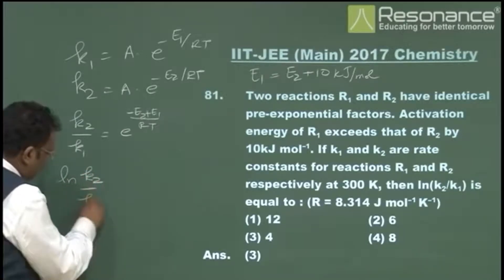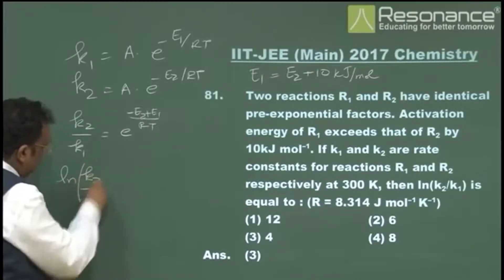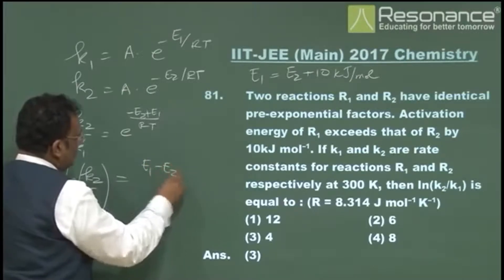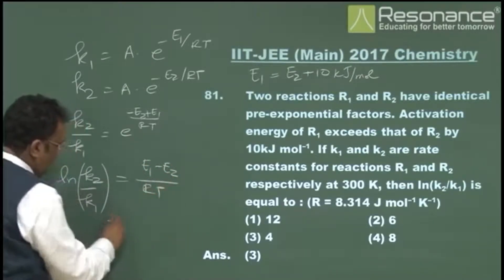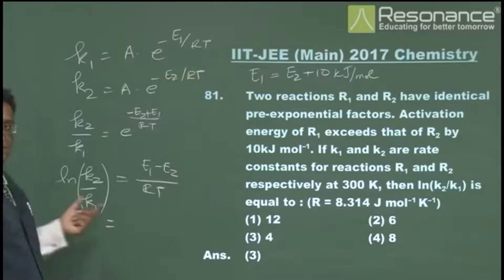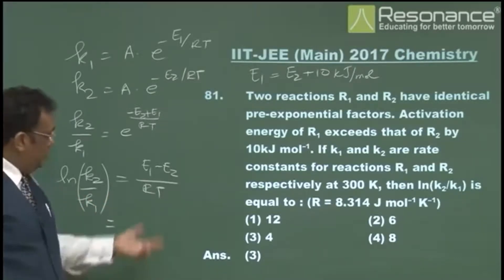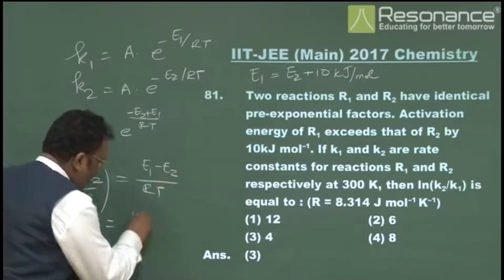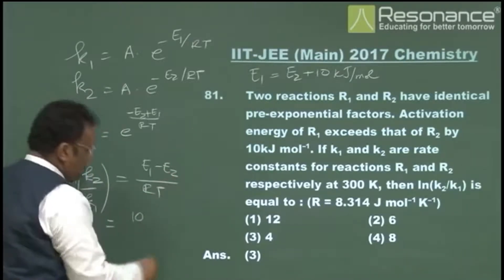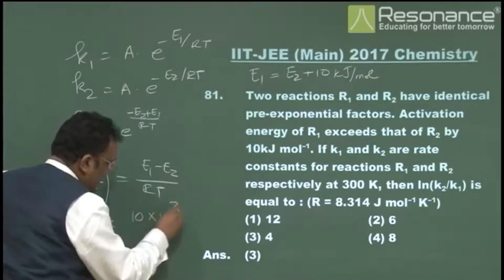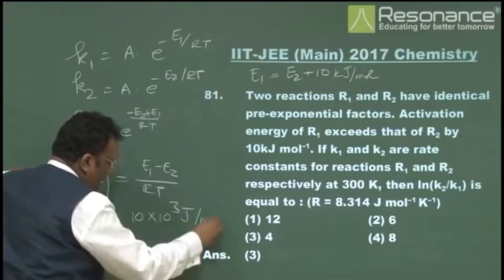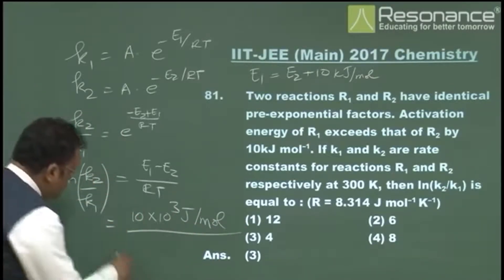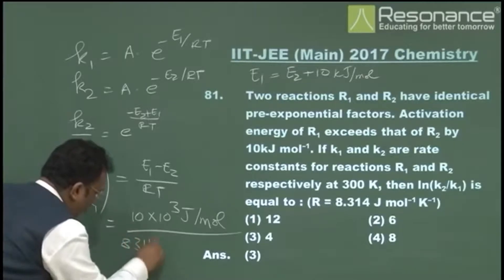We substitute E1 − E2 = 10 kJ/mol. Watch out for units — writing this as 10,000 J/mol because R is going to be 8.314 J/(mol·K). So the expression becomes 10,000 divided by (8.314 × 300).